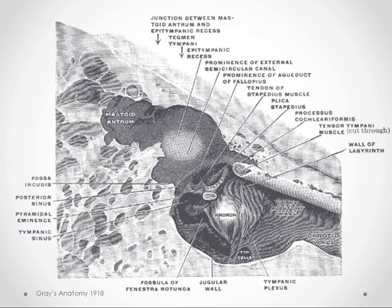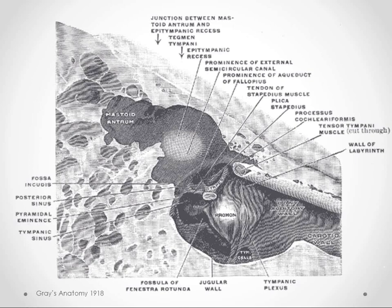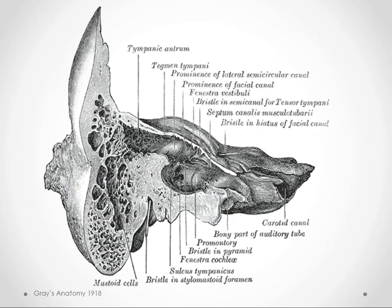Acute otitis media can move up into this epitympanic recess, up into the mastoid antrum, and then down into the mastoid air cells. As you can see, it has to break through some barriers along the way. This purulent material causes destruction of tissue in order to get into this area. Once there's been erosion, you're a bit more likely to get it again.